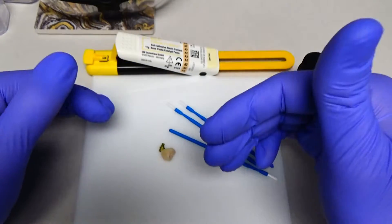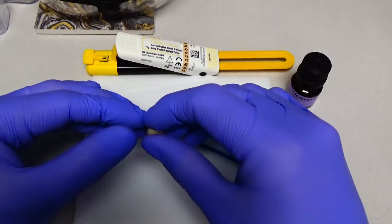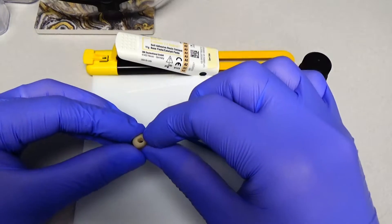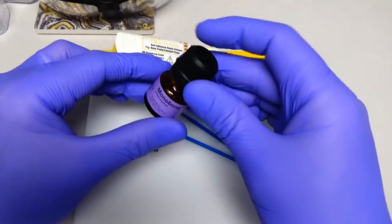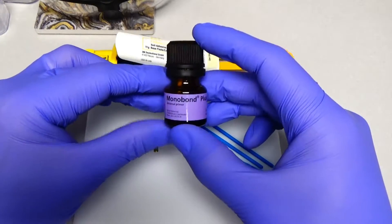Now, if you're doing this with lithium disilicate, you would want to do acid etching on the internal portion here. Now, the next thing to keep in mind is we need to prime.